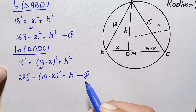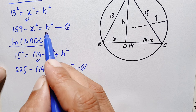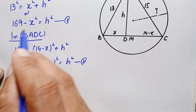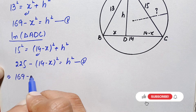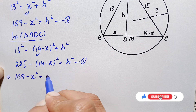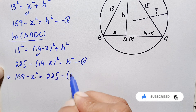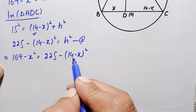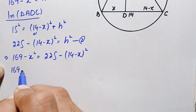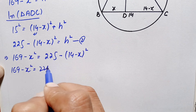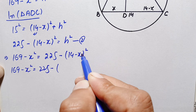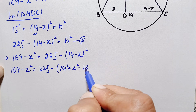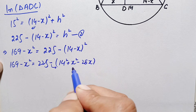Looking at both equations, equation one and equation two both have the same right-hand side h², so we will compare the left-hand sides. This gives us: 169 minus x² equals 225 minus (14 minus x)². Let's simplify this equation for the value of x. We expand using the (a minus b)² identity, so this becomes 169 minus x² equals 225 minus 14² minus x² plus 2 times 14x.